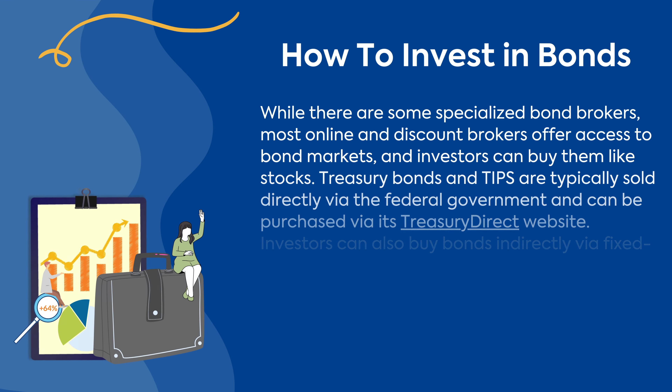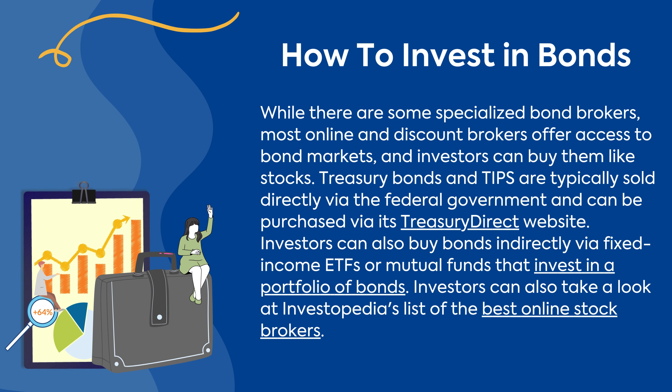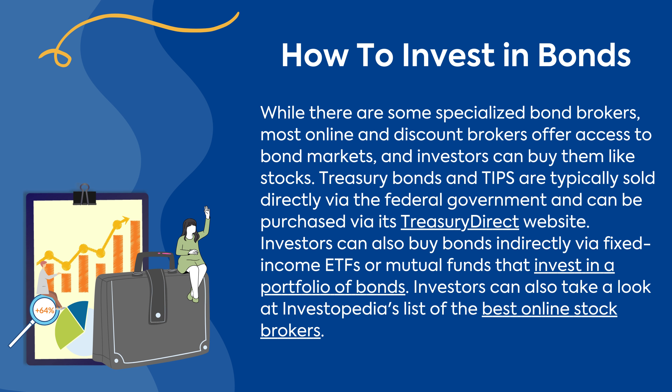How to invest in bonds: while there are some specialized bond brokers, most online and discount brokers offer access to bond markets and investors can buy them like stocks. Treasury bonds and TIPS are typically sold directly via the federal government and can be purchased via its Treasury Direct website. Investors can also buy bonds indirectly via fixed income ETFs or mutual funds that invest in a portfolio of bonds.